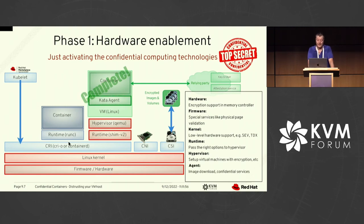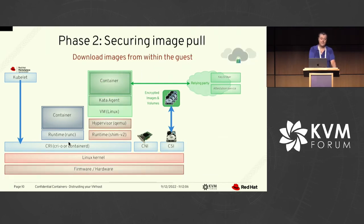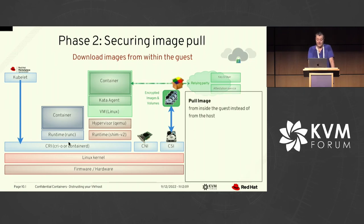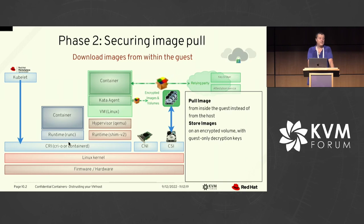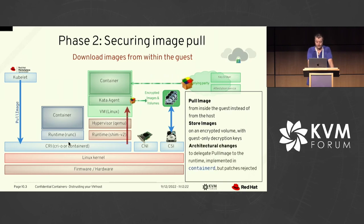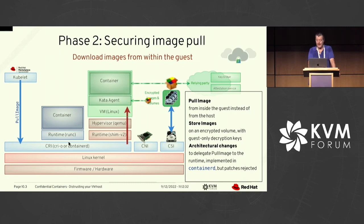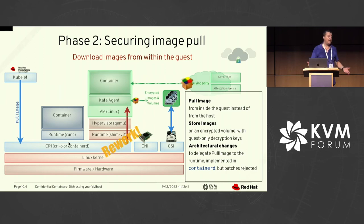The first phase was to activate the hardware confidential computing technologies developed in the kernel and so on — covering hardware, firmware, kernel, runtime, hypervisor, and changes in the Kata agent. Those are the most complicated for us, but this phase was mostly completed last year. When you're there, you're not really offering serious confidentiality yet, because for instance your images are still downloaded on the host. So the next phase is to secure image pull — pulling the image from the guest instead of from the host, and storing it on encrypted transient storage. The problem is this requires an API architecture change because we want to delegate the pull-image feature to the agent. We implemented this in Containerd; it was rejected as-is because they want a better implementation, so that's something we need to rework.